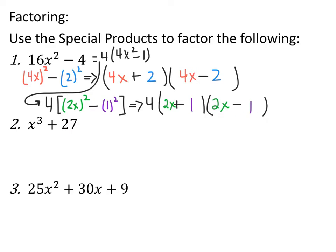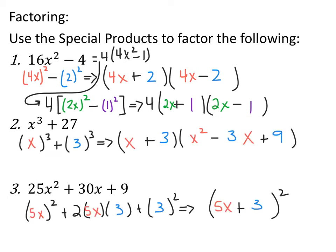The second one is a sum of cubes: x³ + 3³, so we have (x + 3) as the binomial, and the trinomial is x² - 3x + 9, using same sign, opposite sign, always positive. The last one is a perfect square: (5x)² + 2(5x)(3) + 3², so it becomes (5x + 3)².